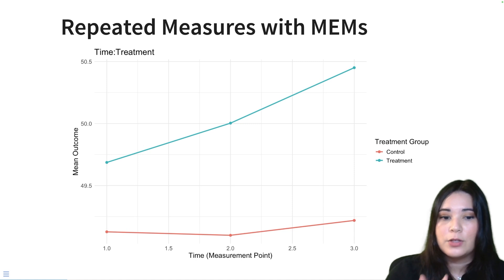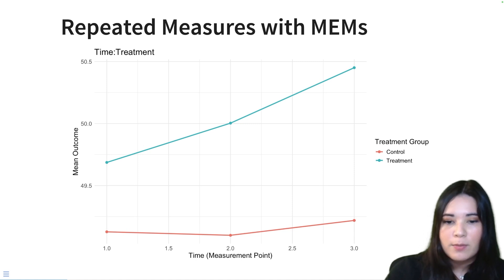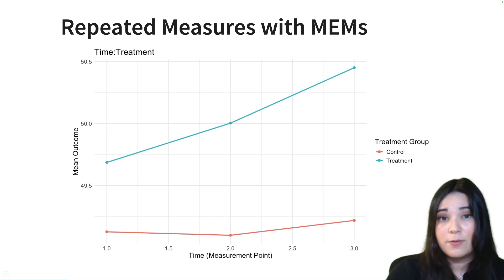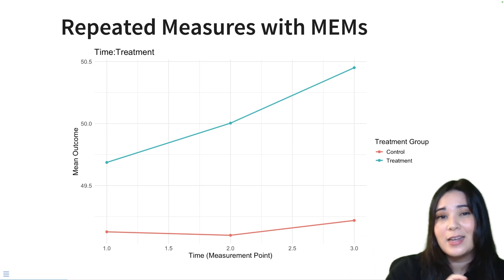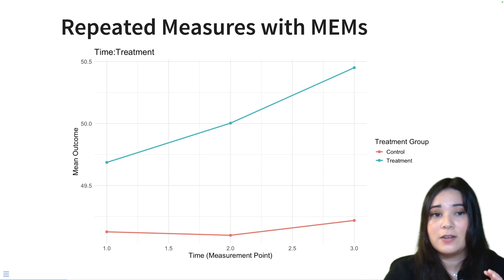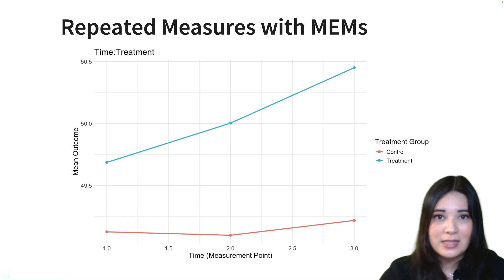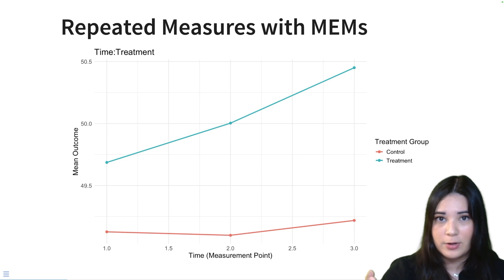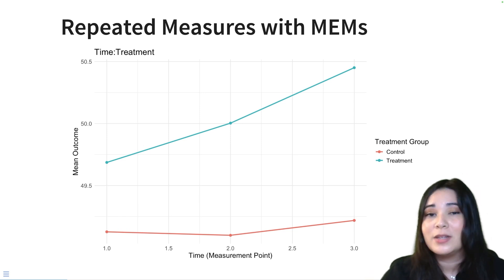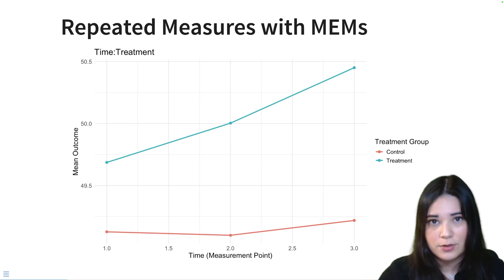I've plotted it out here. What you can see is that for the control group, while they improve a little bit at follow-up, they're relatively flat over time, whereas the treatment group seems to improve a ton over time. This basically tells us that there's an interaction effect — the effect of time is different depending on whether you're in the treatment or the control group. This makes sense because the treatment group improved their memory scores while the control group did not, so they have completely different slopes when we look at pre, post, and follow-up.